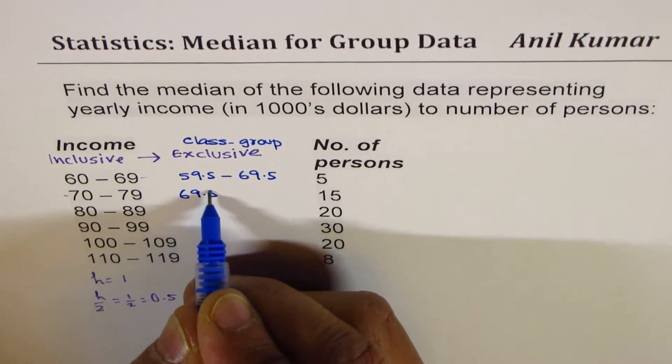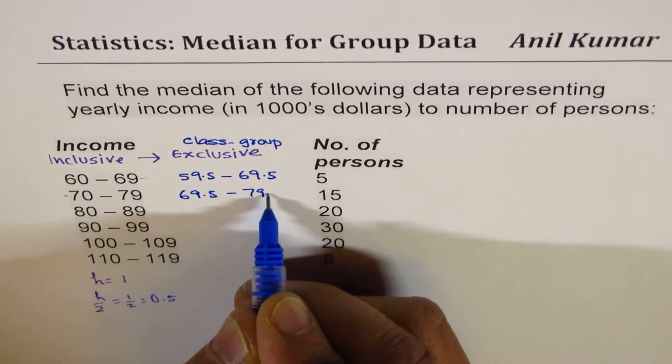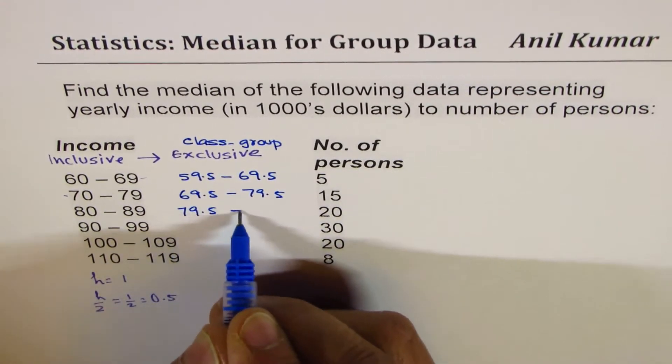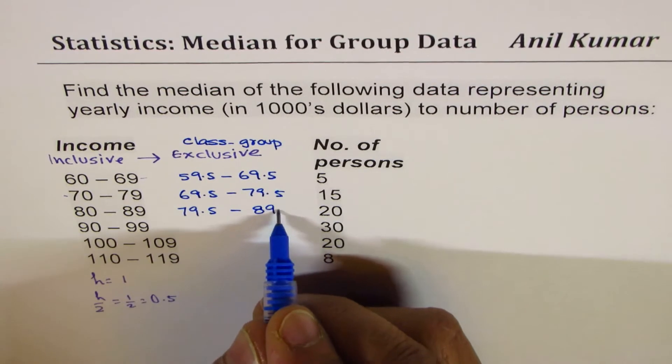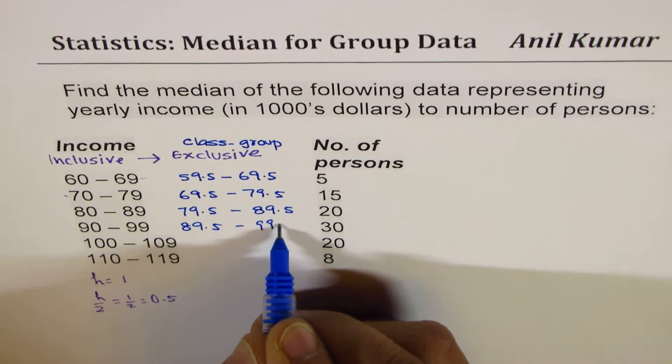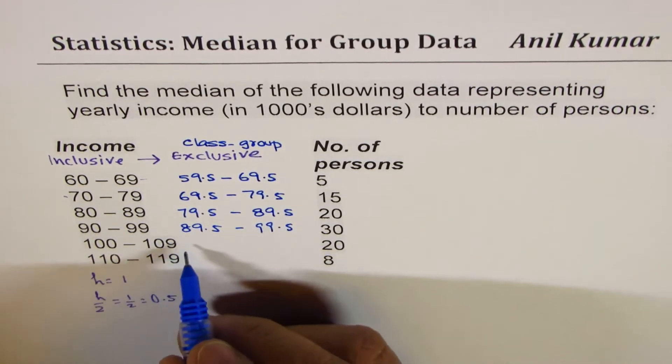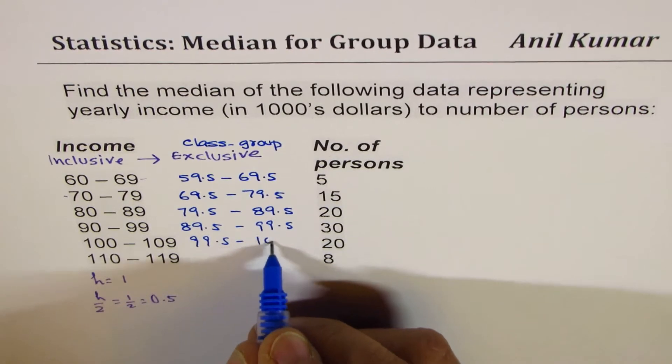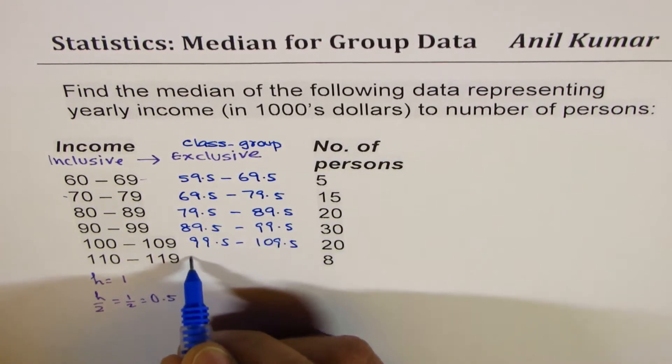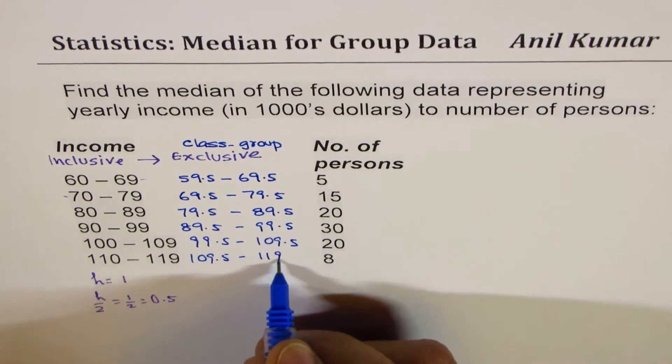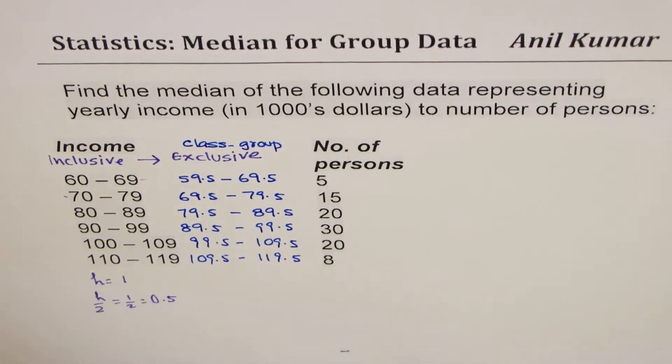This is 69.5 to 79.5, 79.5 to 89.5, 89.5 to 99.5, 99.5 to 109.5, and 109.5 to 119.5. So we add this column of class group.